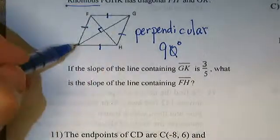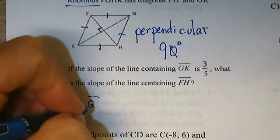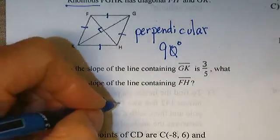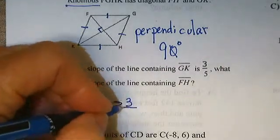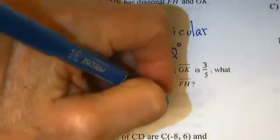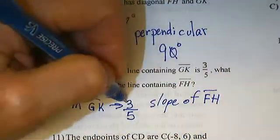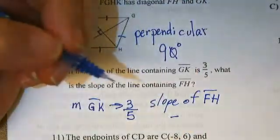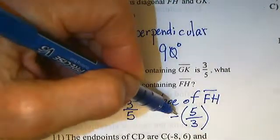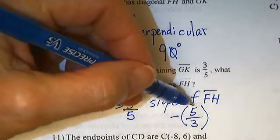If the slope of G, K is 3 fifths, then we know that the slope of F, H, if this is positive, is negative 5 over 3. It's the opposite slope and the inverse fraction. When we multiply together, we get negative 1.